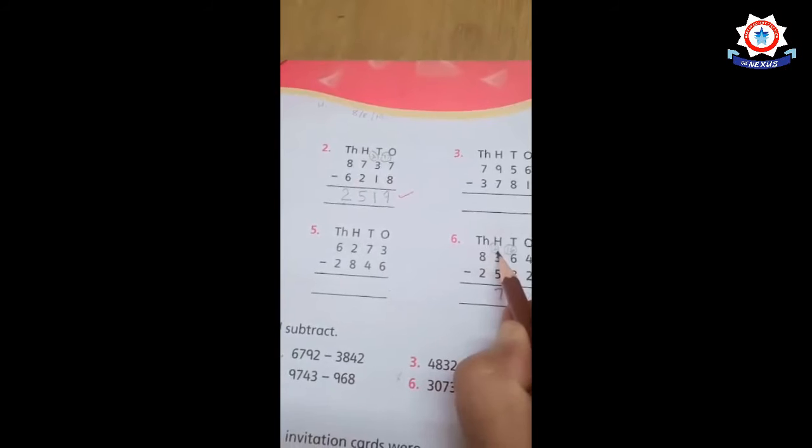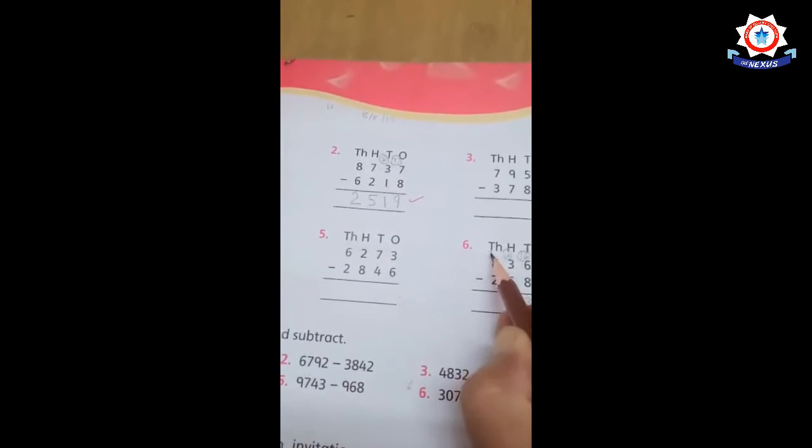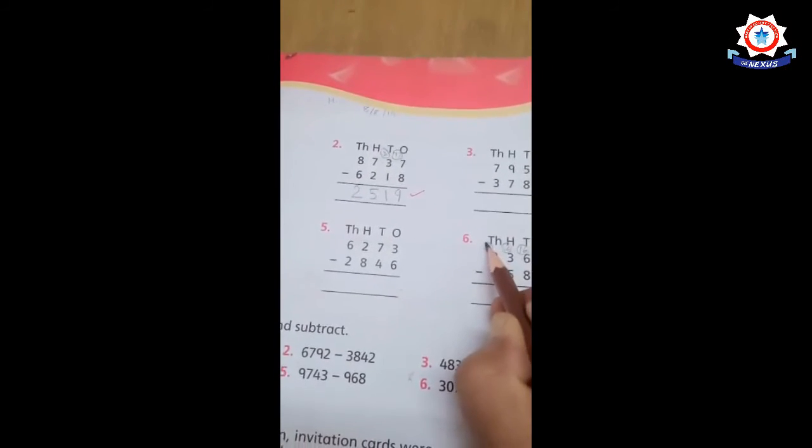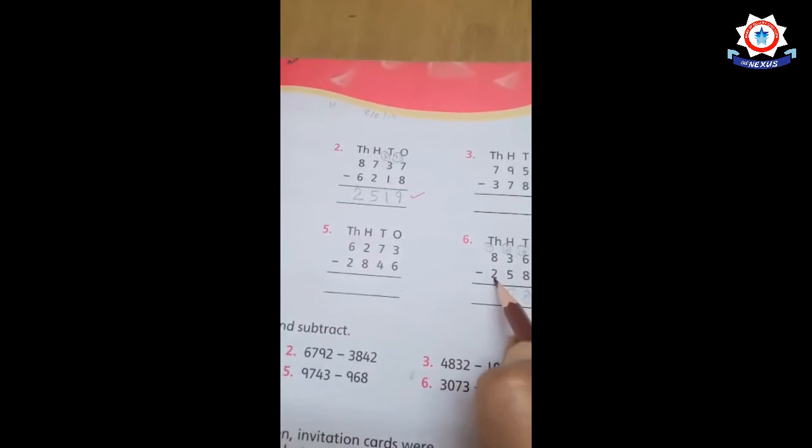And here you have to remember that 8 lent 1, so 8 becomes now 7. You subtract 2 from 7.